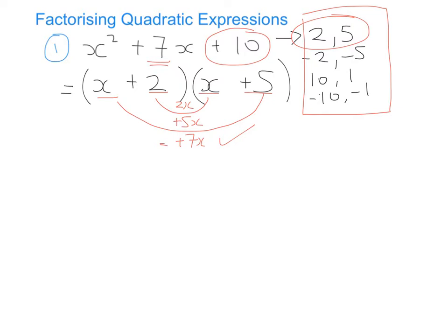These questions are taught differently in different books; there are lots of different methods. This is just the method we use in class, but you may have seen it written differently or taught differently by different teachers, so just be aware of that. Let's move on to example number two: x² - 9x - 22.